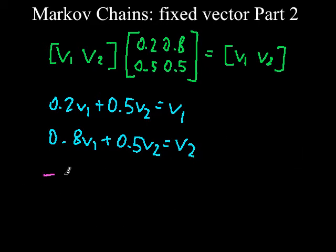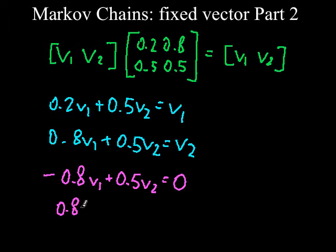Simplifying, we get negative 0.8v1 plus 0.5v2 equals 0, and 0.8v1 minus 0.5v2 equals 0.